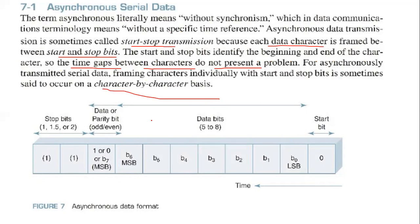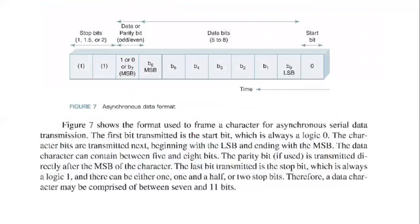Figure 7 shows the format used to frame a character for asynchronous serial data transmission. The first bit transmitted is the start bit, which is always logic 0. The character bits are transmitted next, beginning with the LSB and ending with the MSB. The data character can contain between 5 and 8 bits. The parity bit, if used, is transmitted directly after the MSB of the character.